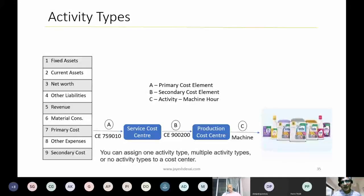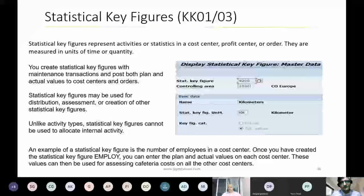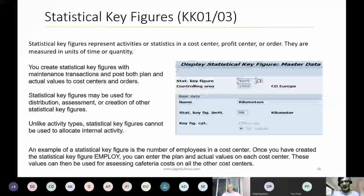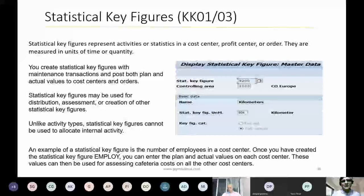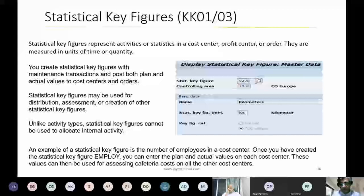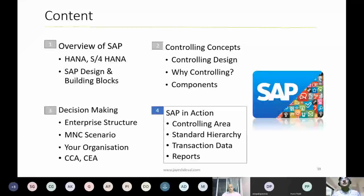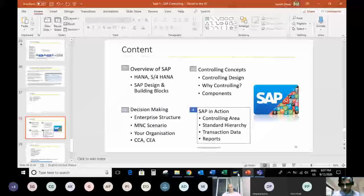Statistical key figures (SKF) are used as the basis for allocating costs. The basis can be a percentage, floor area, number of employees, or energy consumption. For example, to split cafeteria costs, you might use the number of employees in each department. To allocate electricity, you'd use electricity consumption by each department. In SAP, 'kilometers' is an example of an SKF, and you can group these from a reporting perspective.